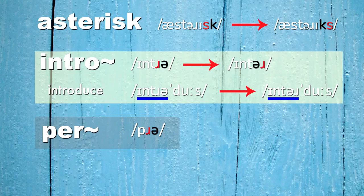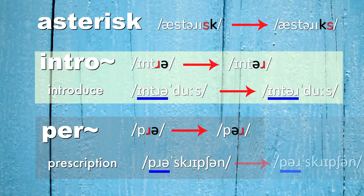Another example: the prefix 'pre' or 'pr' is often pronounced like 'per'. For example, 'prescription' becomes 'perscription'. We can see examples of metathesis, of side-by-side sounds switching positions, in many different languages.